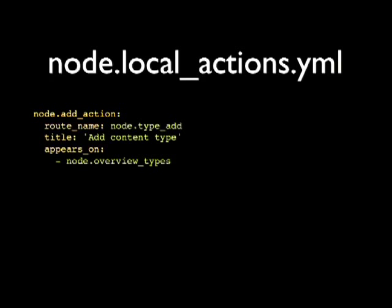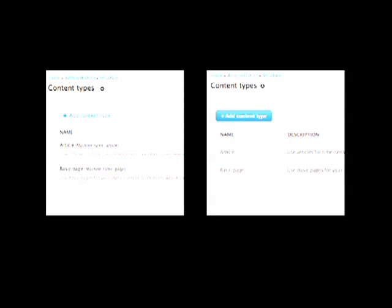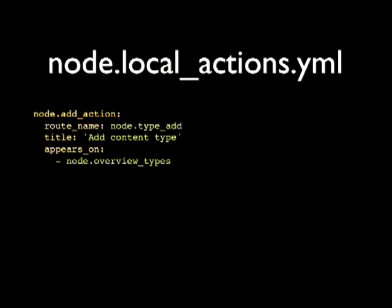The other nice thing is that in Drupal 7 a button could only appear on one page. Now the 'appears_on' is an array — you can list as many routes as you want, and that button will show up on all those pages.